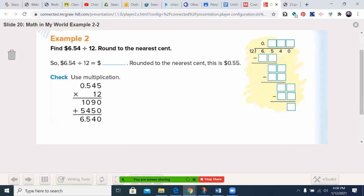Can you see the 545? And we're around to the nearest cent. And when we talk to the nearest cent, it's the hundredths place. So I look at the four. I look at the number to the right. That five means I'm going to add one to the four. So we get 0.55. I can check my work by multiplying my quotient of 0.545, or 545 thousandths, times 12. And I'd end up with 6 and 540 thousandths.